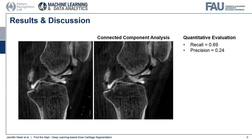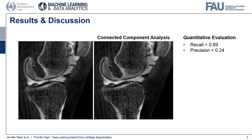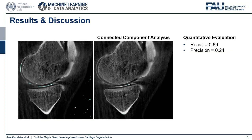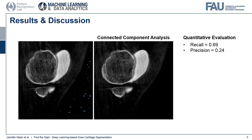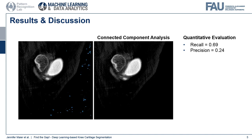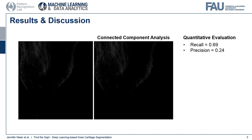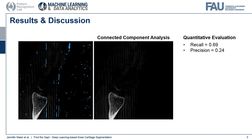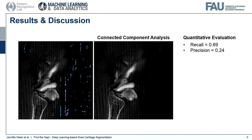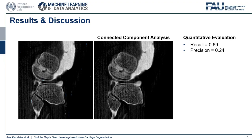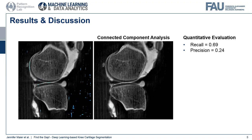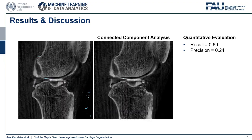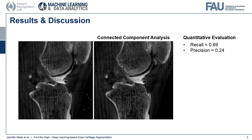After the connected component analysis, a recall of 0.69 is reached, which shows that the network finds almost 70% of the voxels segmented in the ground truth. However, there are still many false positives, as can be seen from the low precision of 0.24.